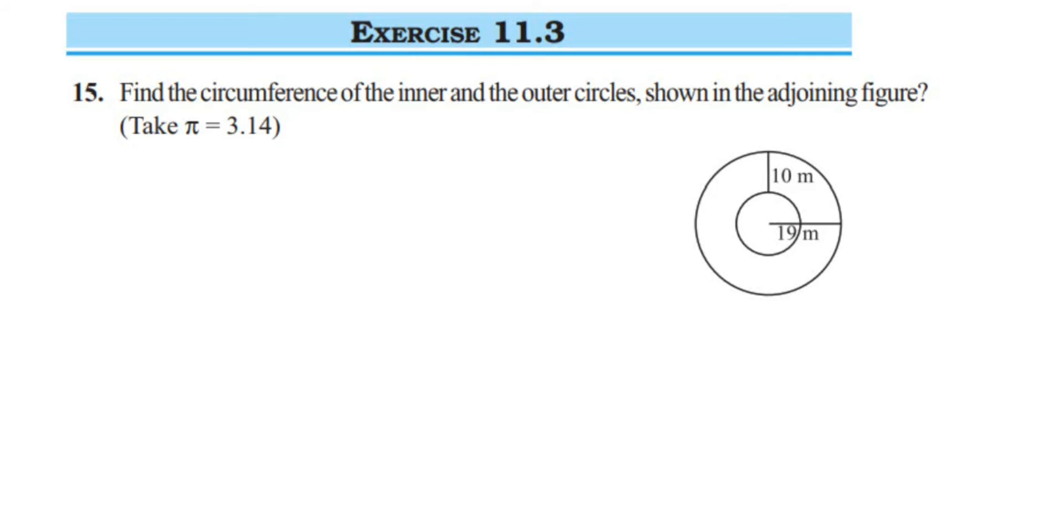Hey everyone, here I am doing Exercise 11.3, 15th question. This is from the chapter Perimeter and Area of class 7. The question is: find the circumference of the inner and the outer circles shown in the adjoining figure. They have given this adjoining figure and the pi value as 3.14.